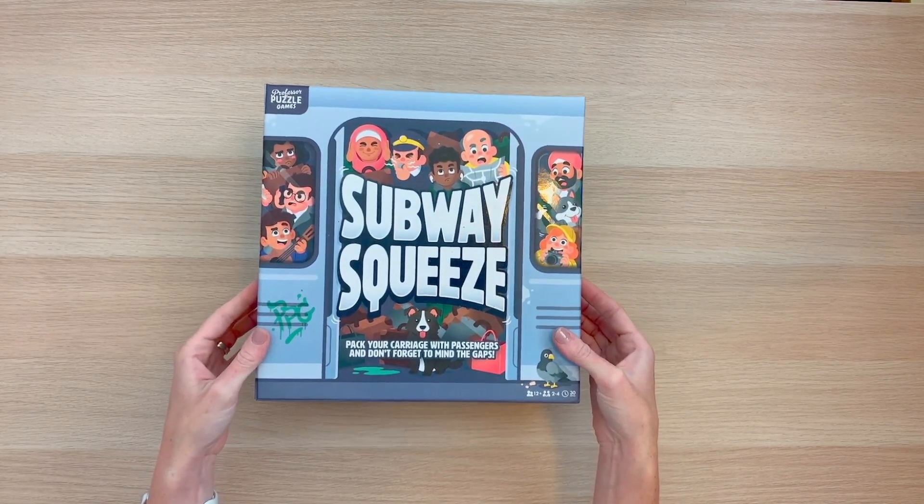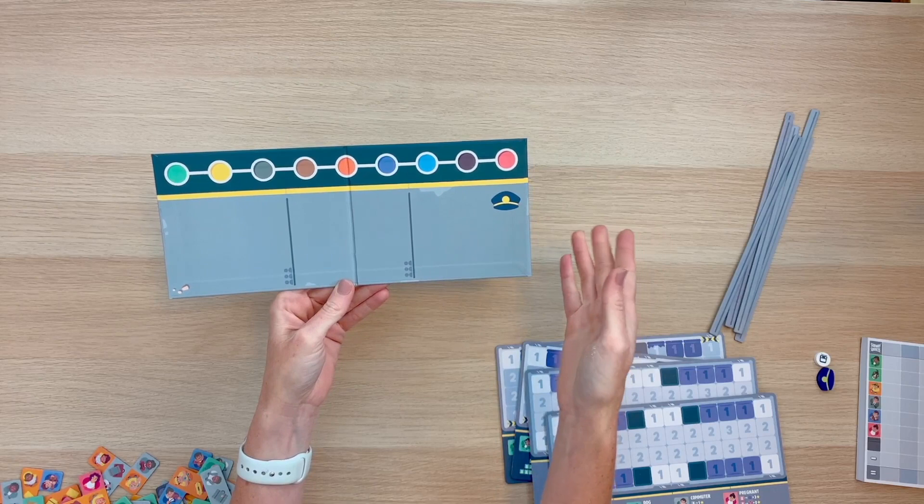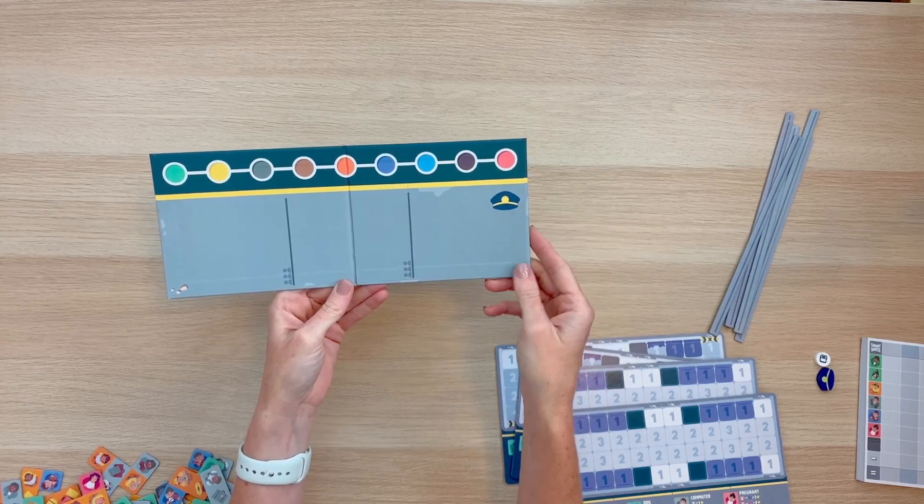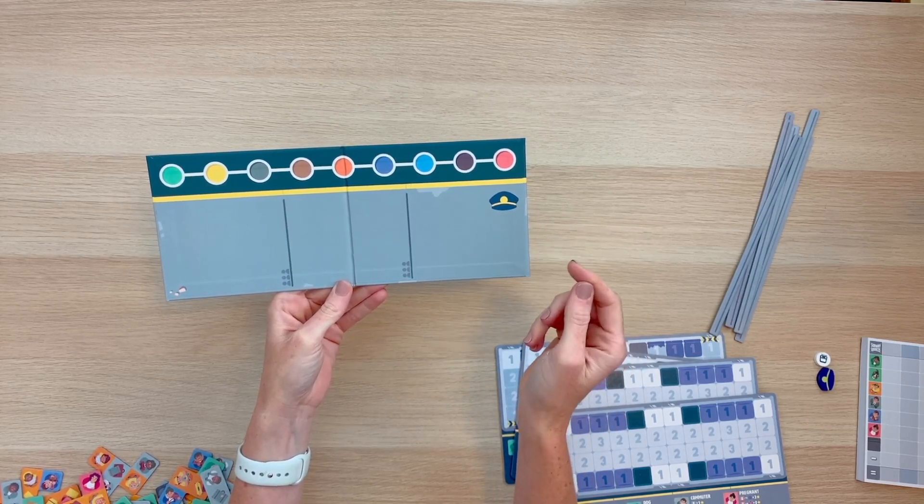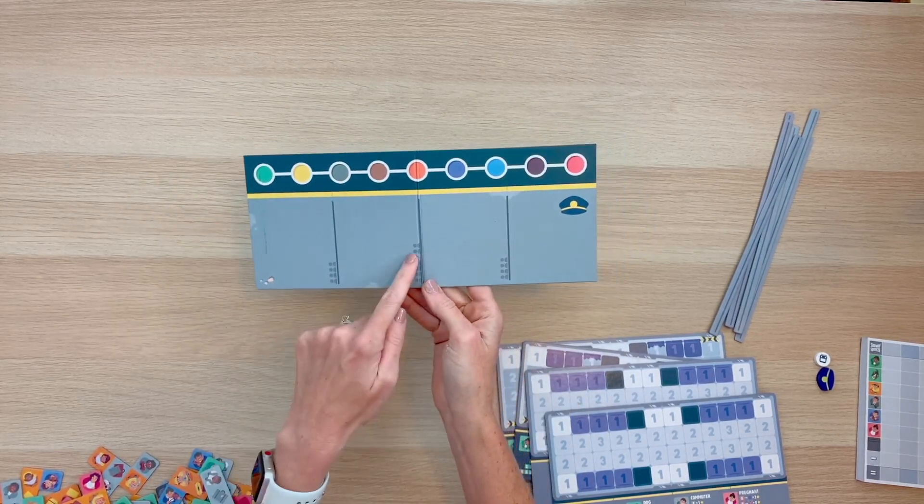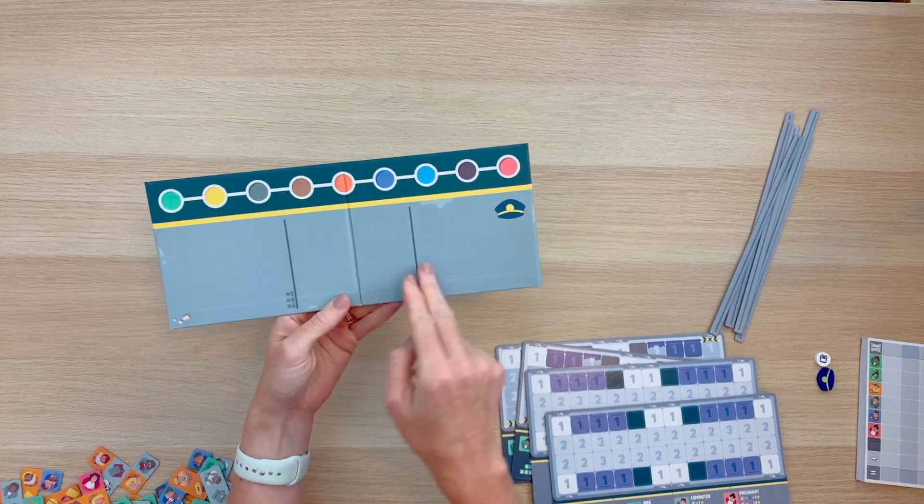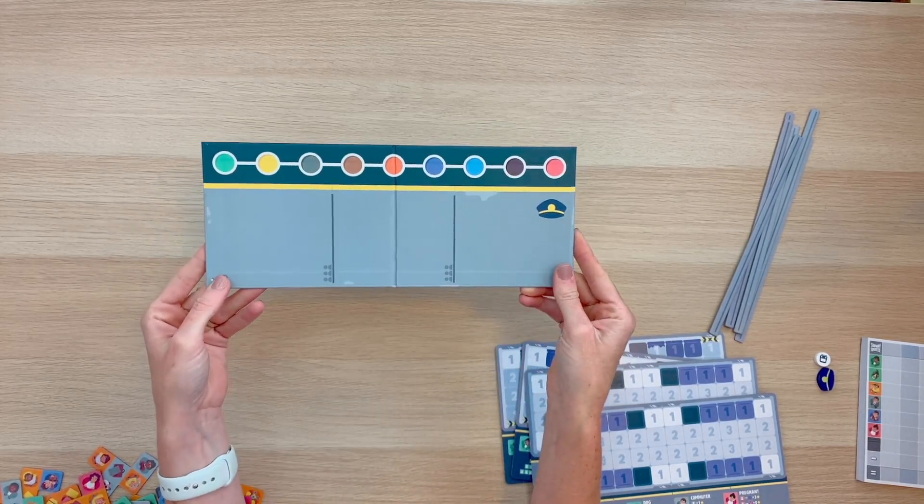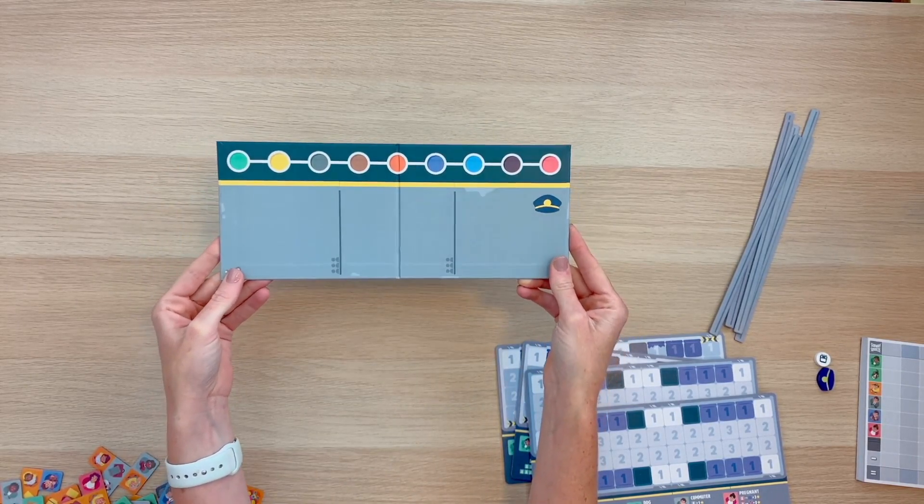Let's take a look at how to set up Subway Squeeze. Now depending on how many players you have playing, your game of Subway Squeeze will determine what side of the board you use. There are icons on both sides of the board to dictate whether it is a 2- or 4-player game or a 3-player game. For our game example today, we'll go ahead and set up a 3-player game.